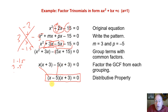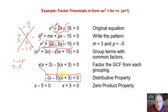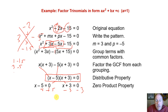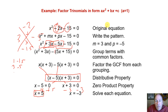We now know our solutions come from this factoring. Using the zero product property, either x minus 5 equals 0 or x plus 3 equals 0. Solving each using addition and subtraction properties, we get our two solutions: x equals 5 or x equals negative 3. They're both valid solutions — both zeros of the function x squared minus 2x minus 15.